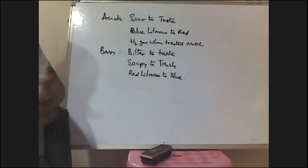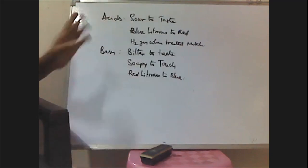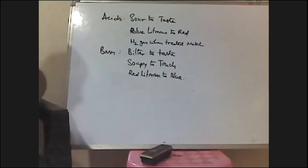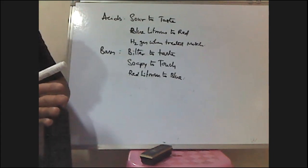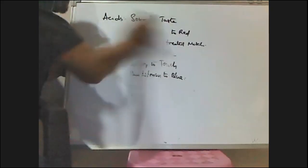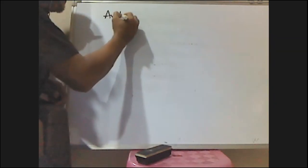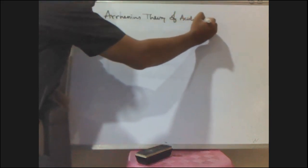There are various theories regarding these acids and bases. Every time it is not possible to check or taste the acid or base. For example, all acids we cannot touch or taste. That is why, theoretically, to predict whether a given substance is acid or base, there are several theories. In this video, I am going to discuss about the Arrhenius Theory of Acids and Bases.